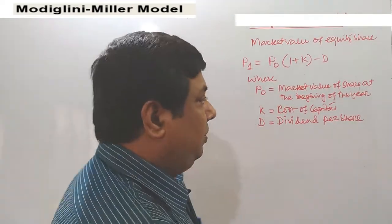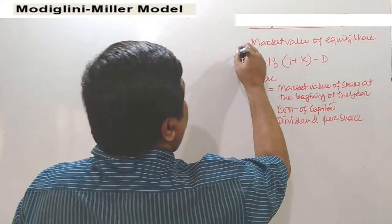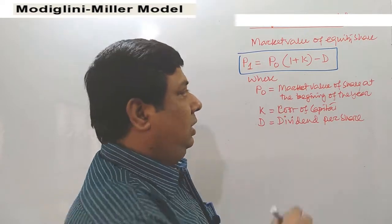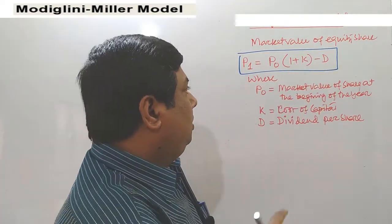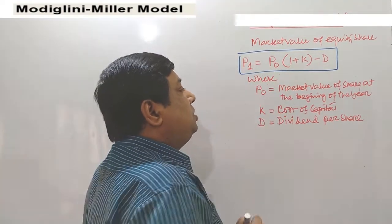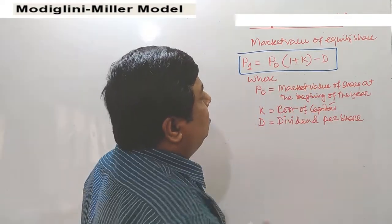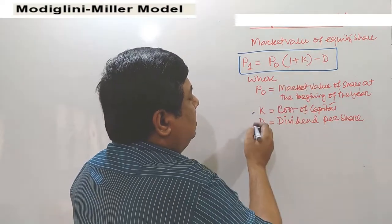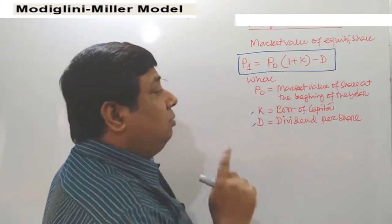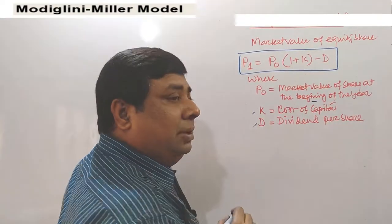Let's follow the formula. Under the Modigliani and Miller model, the market value per share can be expressed as: P1 equals P0 multiplied by (1 plus K) minus D. P1 represents the market value per share at the end of the year, whereas P0 represents the market value per share at the beginning of the year. K is the cost of capital and D is the dividend per share.